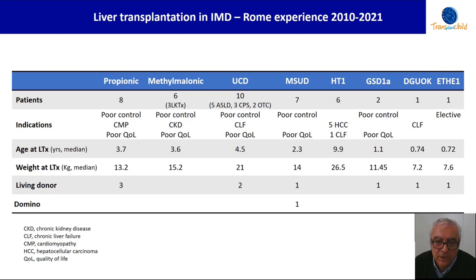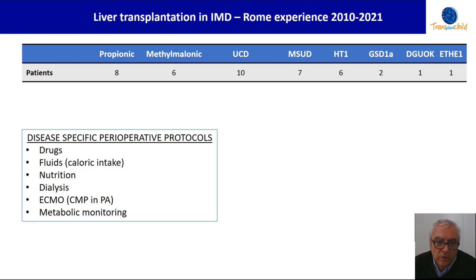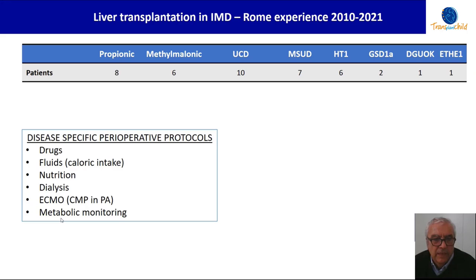Regarding disease-specific perioperative protocols — an important point — we designed disease-specific perioperative protocols in terms of use of specific drugs for the disease, fluids particularly in relation to caloric intake, and nutrition, as most of these diseases are related to amino acid metabolism and renutritioning after transplantation represents an important issue. We also utilized specific protocols using dialysis or ECMO in some more complex conditions, and of course designed a targeted metabolic monitoring.